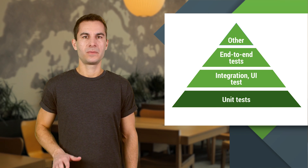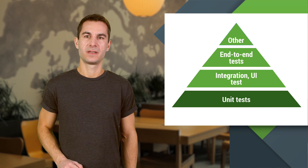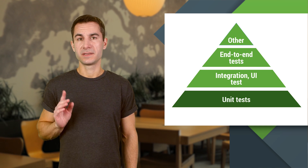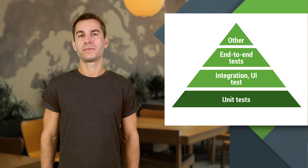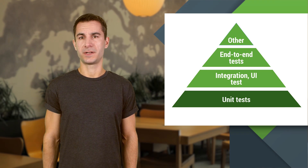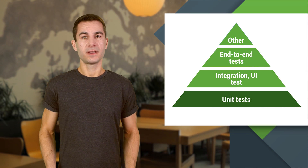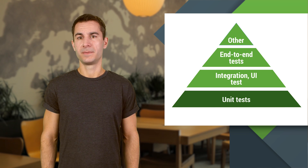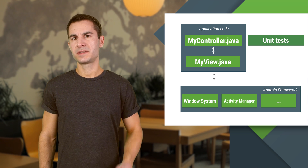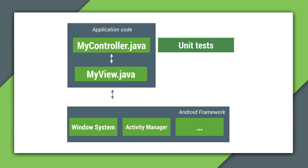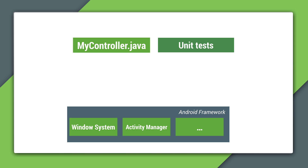Unit tests are perhaps the most basic type of tests, but basic is not the same as unimportant. In fact, they should form the foundation of your whole test strategy — that's why they sit at the bottom of the pyramid. Unit tests verify the correctness of the smallest units of your code, such as methods and classes, in isolation from the rest of the code base or even the platform they will be running on.